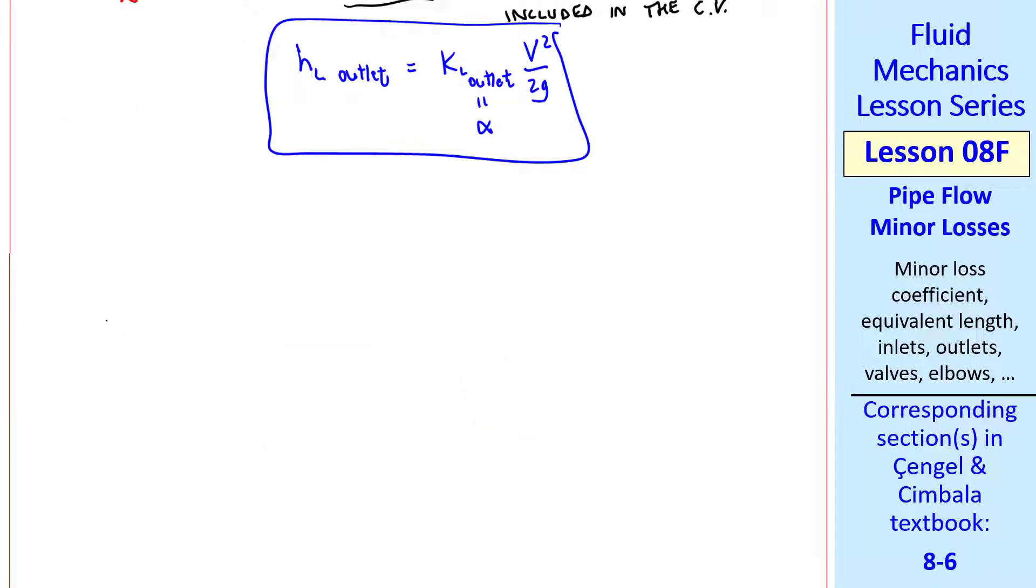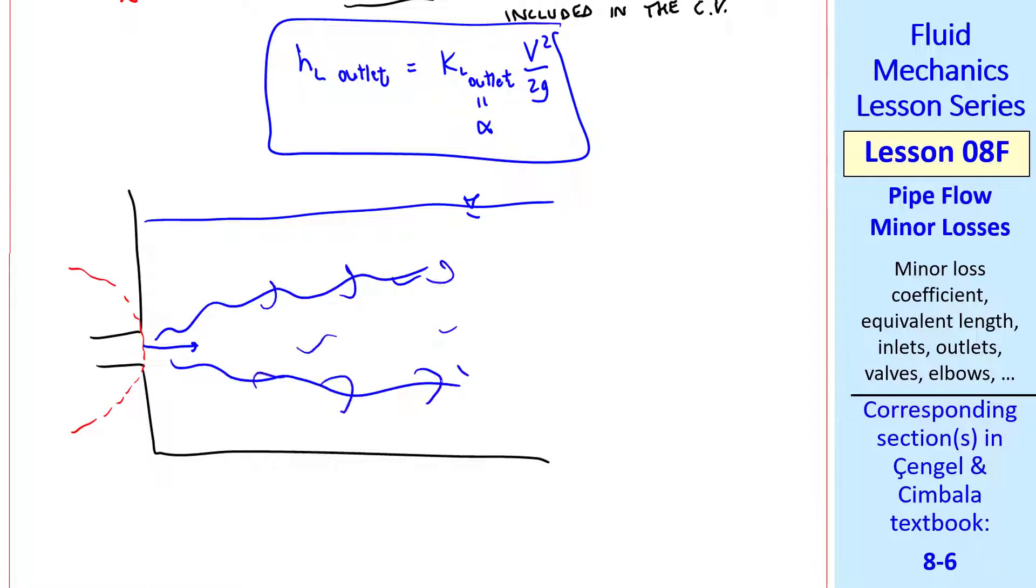What if we take that same outlet, but you decide to put your control volume through the outlet of the pipe? We still have the same jet with all the dissipation, but here the outlet is not counted as a minor loss, since the jet is not included in the control volume.